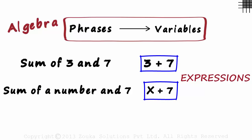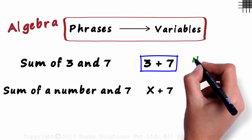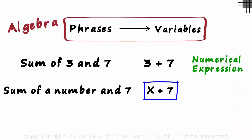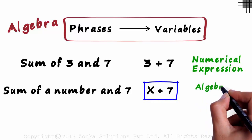Both these are called expressions. As this involves only numbers, it's called a numerical expression. And because it involves variables, it's called an algebraic expression.